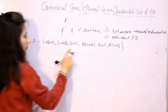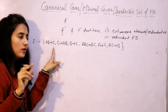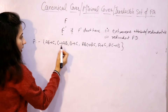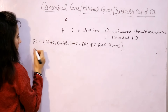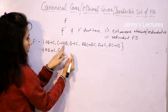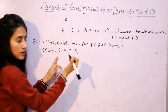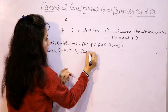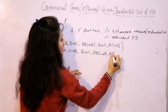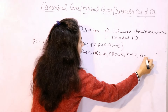Now let us take this example. Step one: apply the splitting rule, because we want the right-hand side of every functional dependency to have only a single attribute. Here, this one is having two attributes and this one is having two attributes. So just split them. C → AB becomes C → A and C → B. And ABC → AC becomes ABC → A and ABC → C.